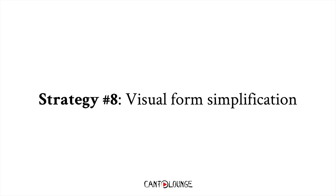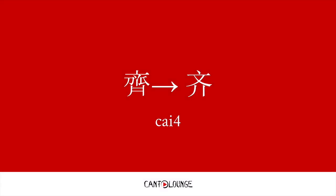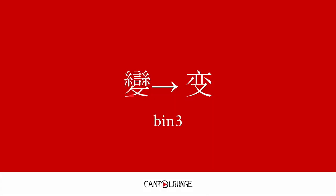Strategy number 8 would be visual form simplification. For example, you can see that they're a little bit similar. This dot on the top is similar, they retain this and this, and then they replace this entire bit with two slanted strokes, and then got rid of these two horizontal lines. So it's a simplified visual representation of the original character 才, which means together.